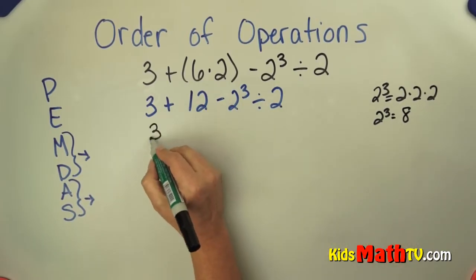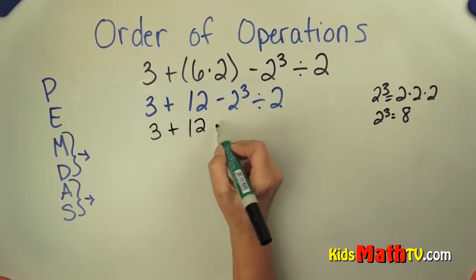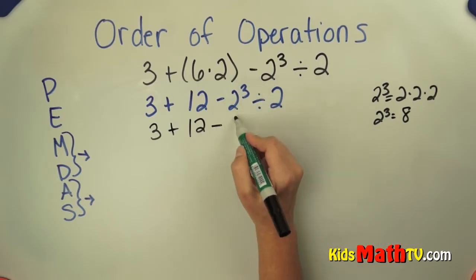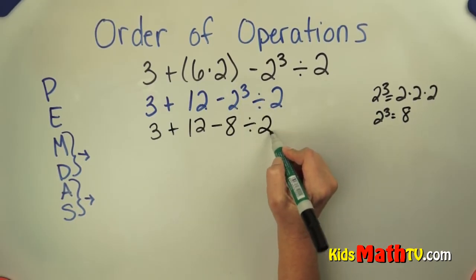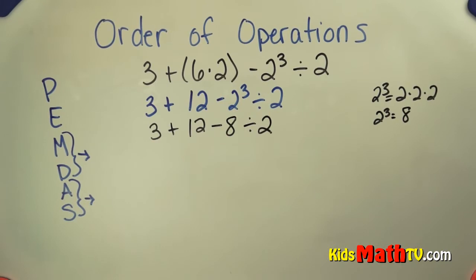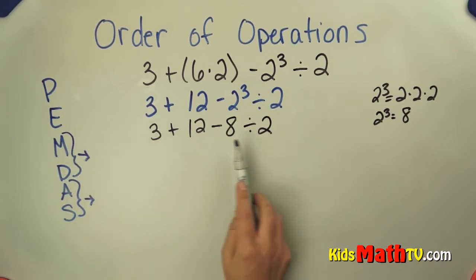So I have 3 plus 12 minus 8 divided by 2. I've done my exponents. Now I look to see if there's any multiplication or division, and I do that from left to right. I see that there is division.